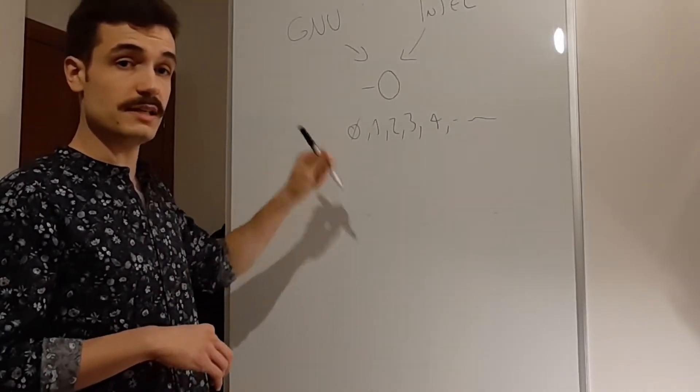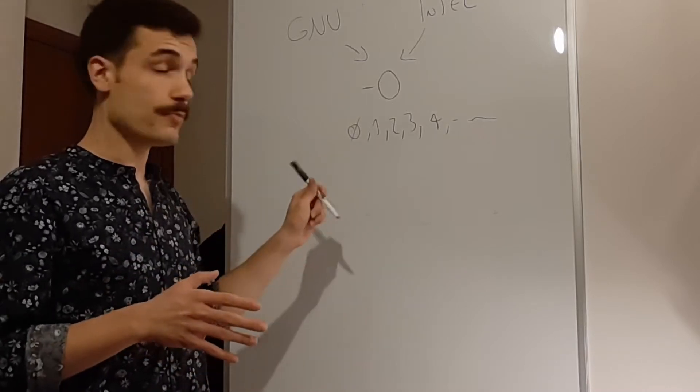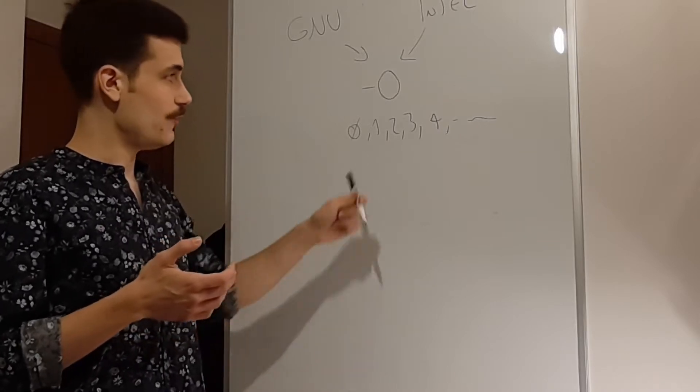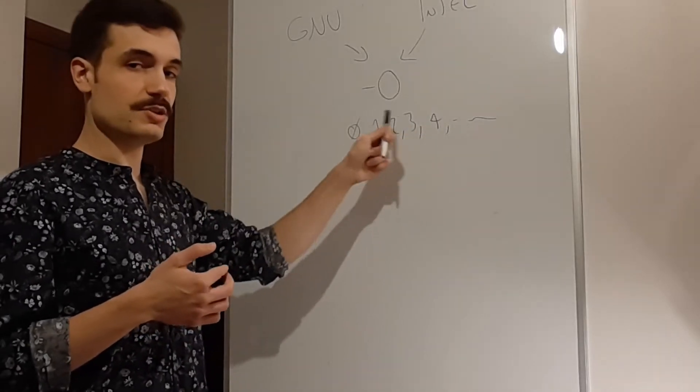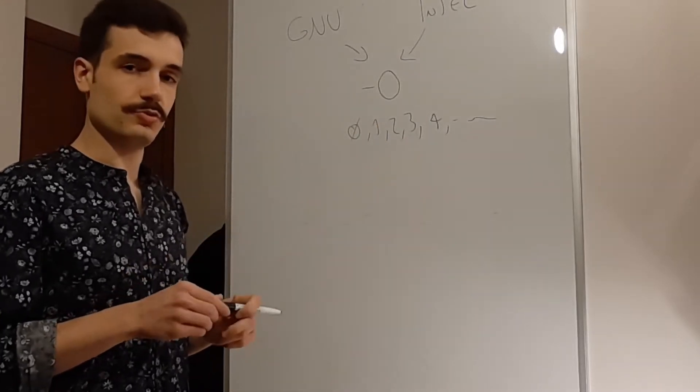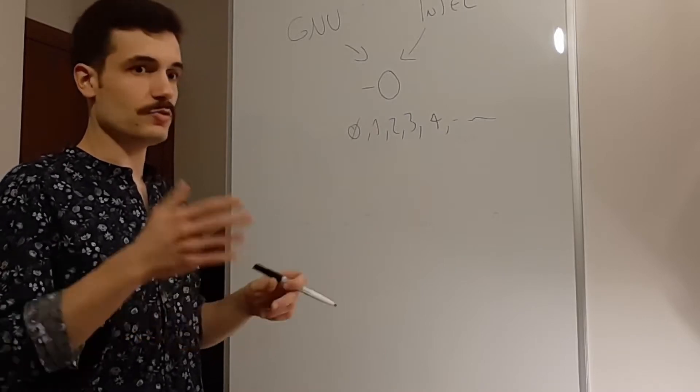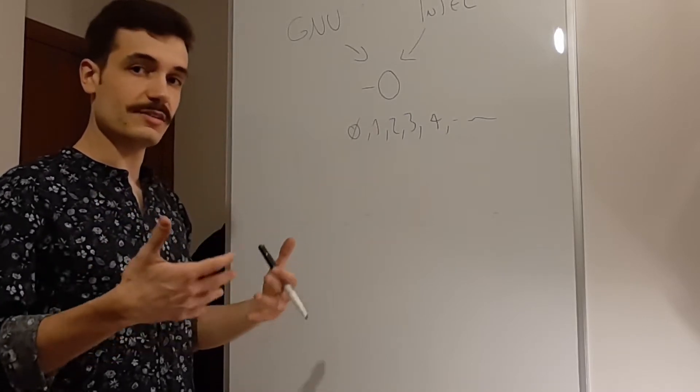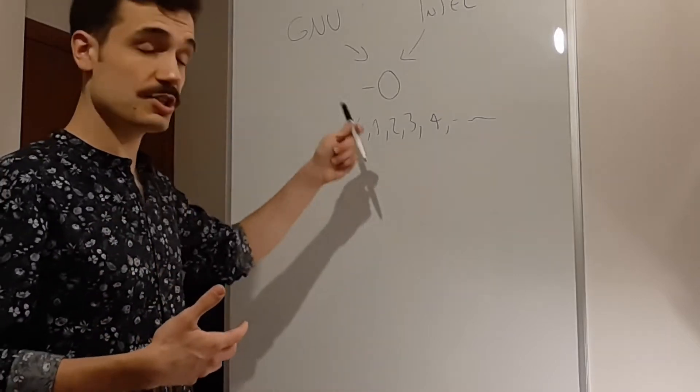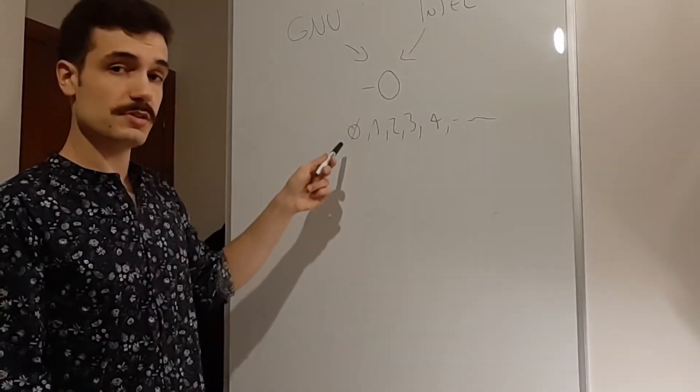But the important thing to know is minus O0 means absolutely no optimization is done, and that's very important when you have to do debugging. Because if you let the compiler change your code by doing some kind of optimization, you won't be able to do debugging anymore. Because if you use a debugger, you will get information that has no sense with the source code you wrote, because the source code will have been changed by the compiler. For GNU,